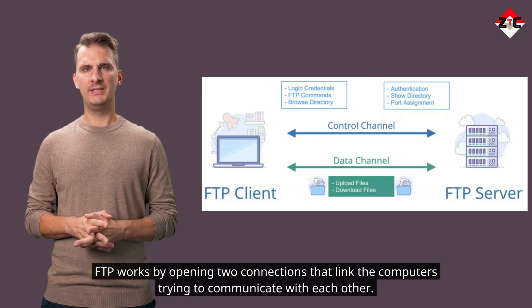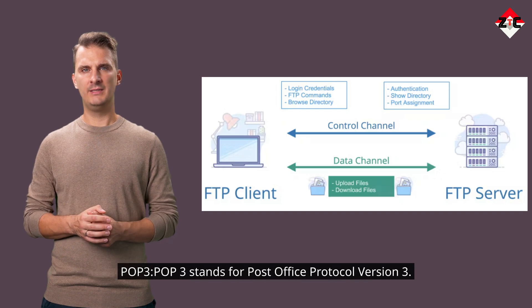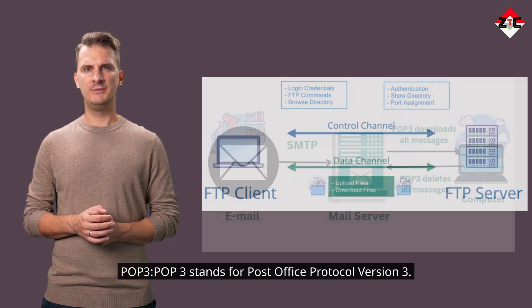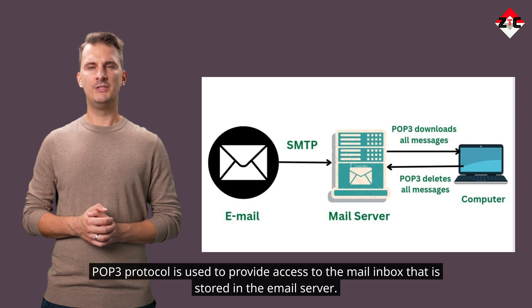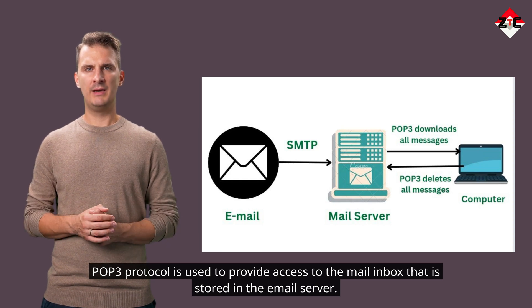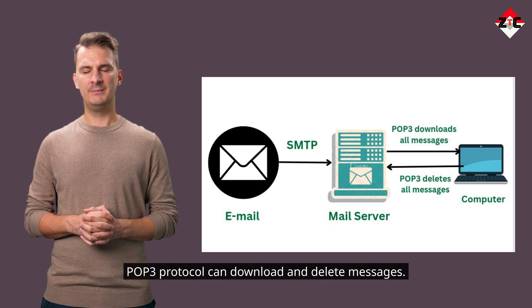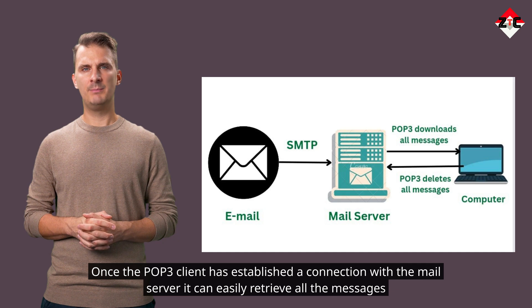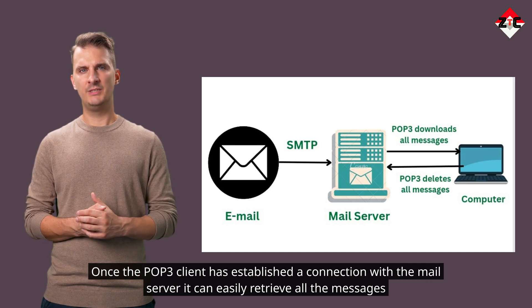FTP works by opening two connections that link the computers trying to communicate with each other. POP3 — Post Office Protocol version 3 — is used to provide access to the mail inbox stored on the email server. POP3 can download and delete messages; once the POP3 client establishes a connection with the mail server, it can retrieve all messages from the server.